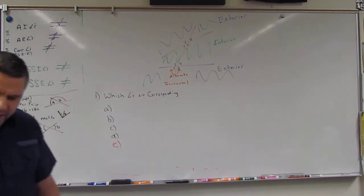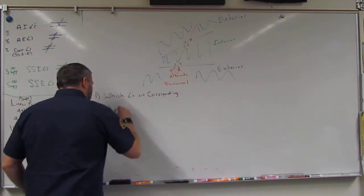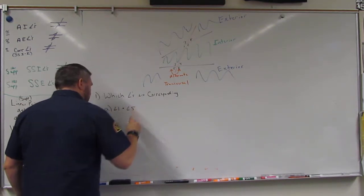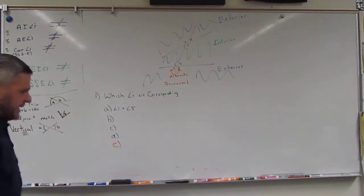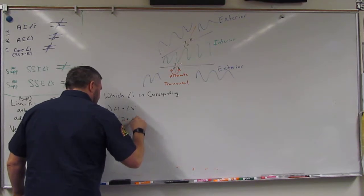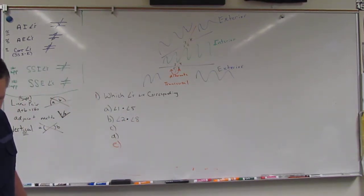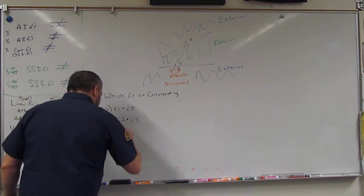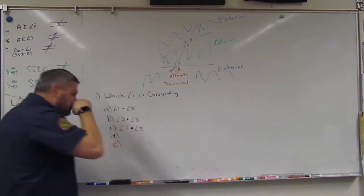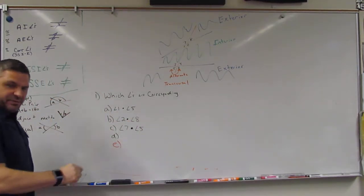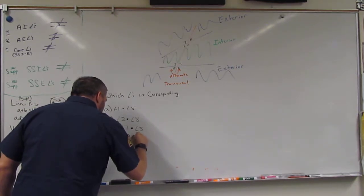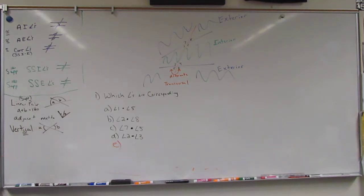Alright. So on there, A was one and five. Their B was two and eight. Their C was seven and five. And their D was two and three.